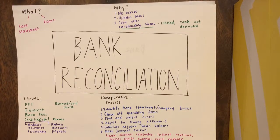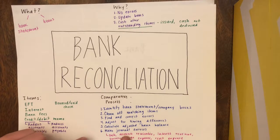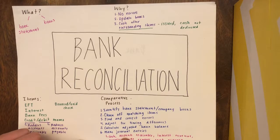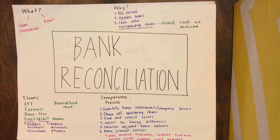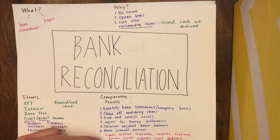The last step in the bank reconciliation comparative process is to make journal entries. These journal entries will be based on the bank reconciliation sheet that you just used between the bank and the company's books. Some common journal entries are cash, accounts receivable, interest revenue, service charge expense, and rent expense.